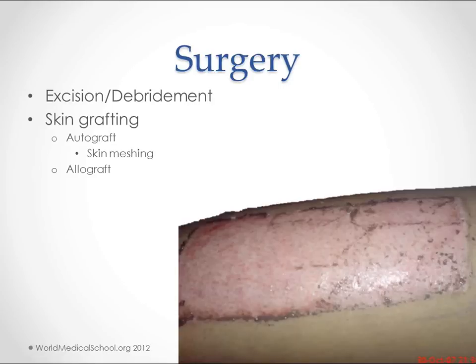Skin grafting is an important part of regaining function and cosmesis. An autograft means you're taking skin from another area of the body — you use a dermatome, a little slicer, that cuts off a thin layer of skin and transfers it to another part of the body. An allograft is skin taken from another individual.